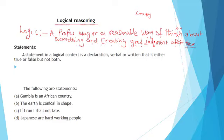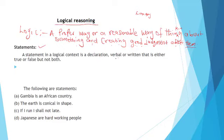The most important element we use in dealing with logic is called a statement. In English language we have sentences, statements, conversations — but in logic we only make use of statements. A statement in a logical context is a declaration, verbal or written, that is either true or false but not both.